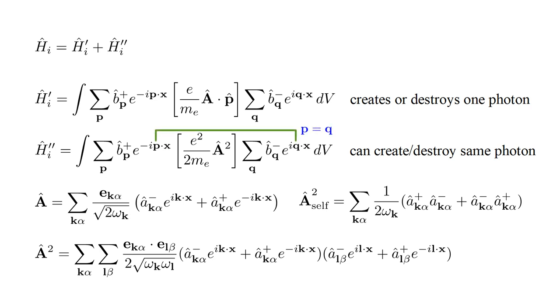In this case, the only factors in h-hat i-double-prime with spatial dependence are e to the minus i p-dot-x and e to the i q-dot-x. The integral of this product over space vanishes, unless p equals q, in which case the product is one. This simply tells us that if we create and destroy the same photon, we must create and destroy the same electron, to conserve momentum and energy.